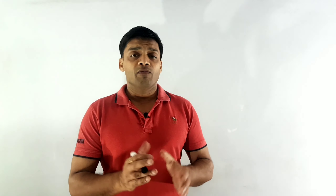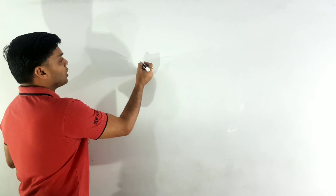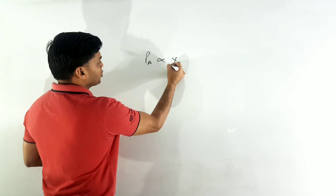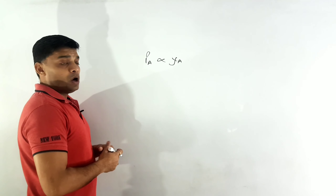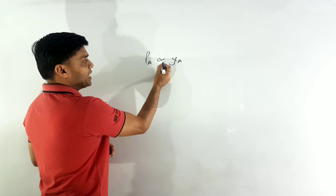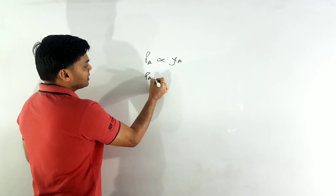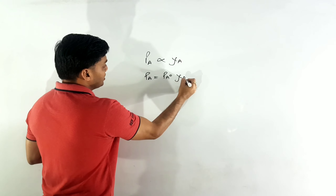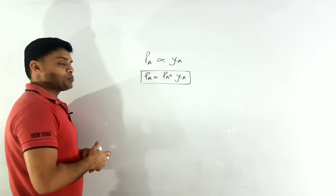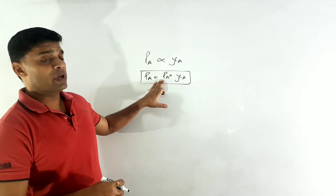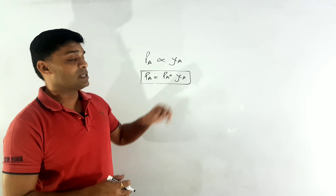Ideal solutions are those which completely follow Raoult's law over the entire concentration range. According to Raoult's law, the vapor pressure of the solvent over the solution is directly proportional to the mole fraction of the solvent in the solution: p_A = p_A° · χ_A. This was the expression for Raoult's law, and ideal solutions are those which follow this expression over the entire concentration range.